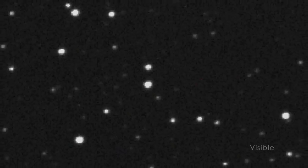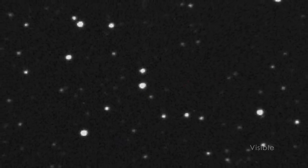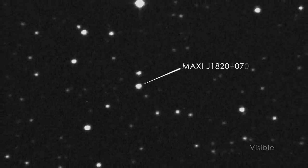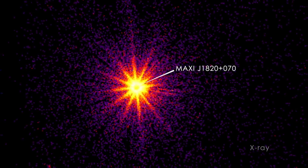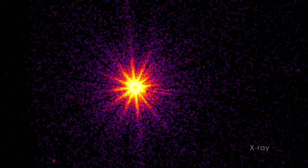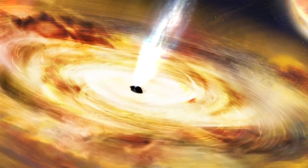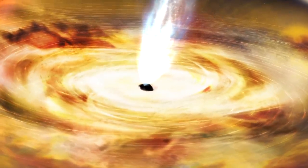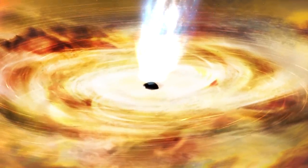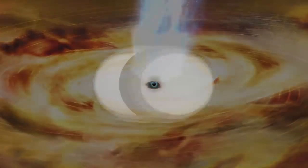NICER let us watch a flare of light from the area around a black hole called Maxi J1820 plus 070, or J1820 for short. This stellar mass black hole is around 10 times the sun's mass and funnels gas away from a neighboring star and into a dense ring of material called an accretion disk.